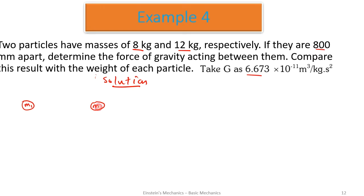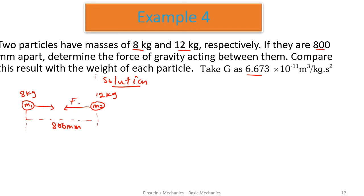We can make a demonstration: two particles, m1 of 8 kilograms and m2 of 12 kilograms, separated by 800 millimeters between their centers. From the law of gravitation, for any two particles there is a force that exists between them — each is trying to pull the other. This is force f2 on one side and f1 on the other, and f1 equals f2. The question asks us to calculate this force.